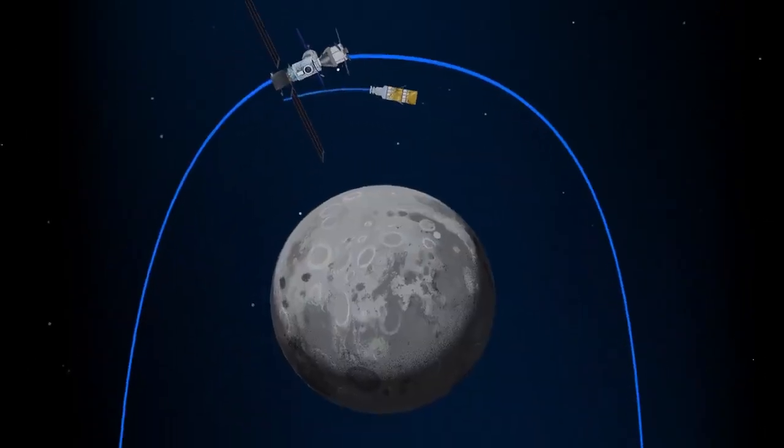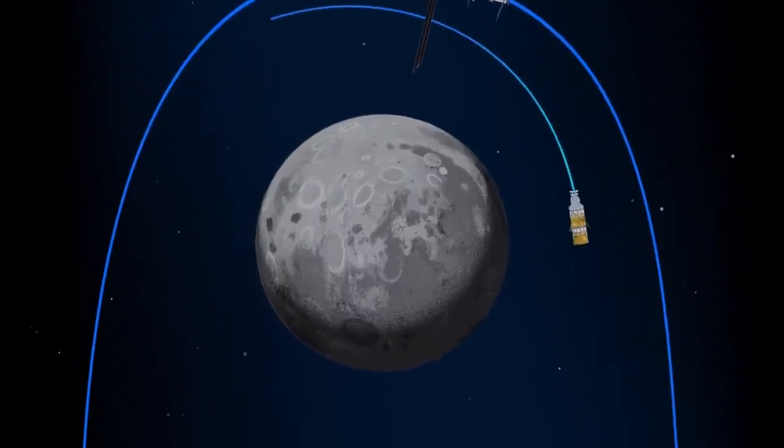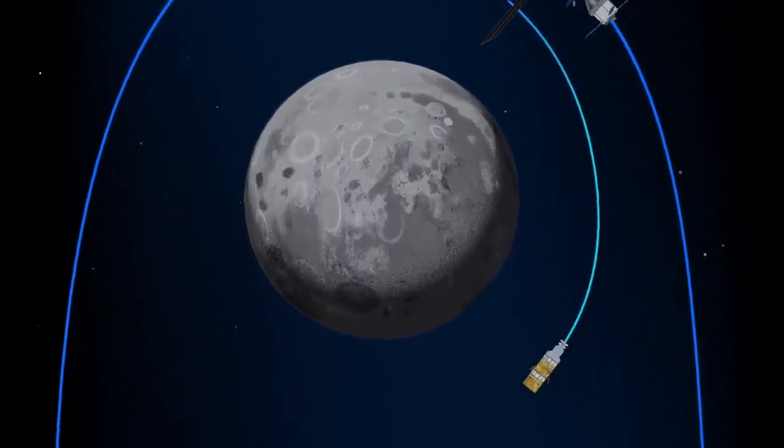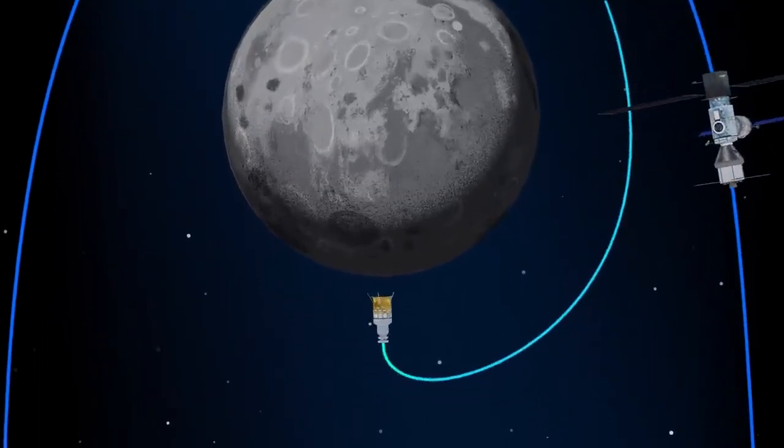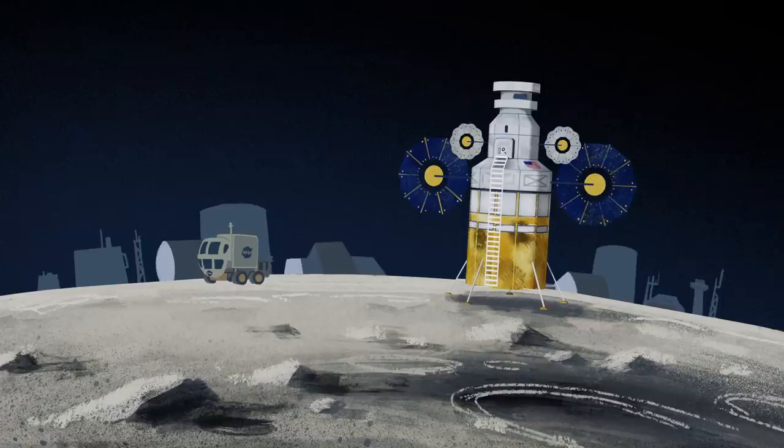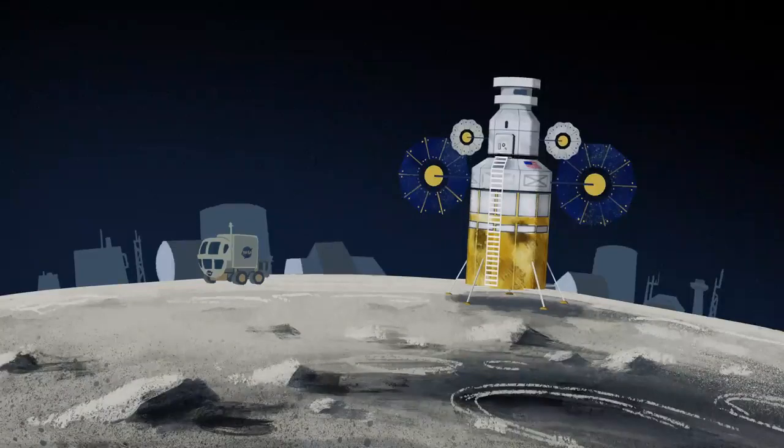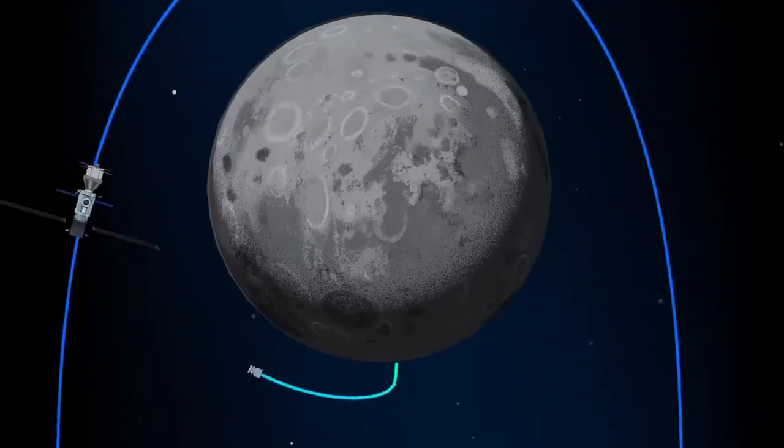The lunar lander system itself is built for three unique steps: descending from the halo orbit of Gateway down to a low lunar orbit, descending from low lunar orbit to the surface, and once the lunar mission is complete, launching from the surface of the Moon and ascending all the way back to the orbiting Gateway.